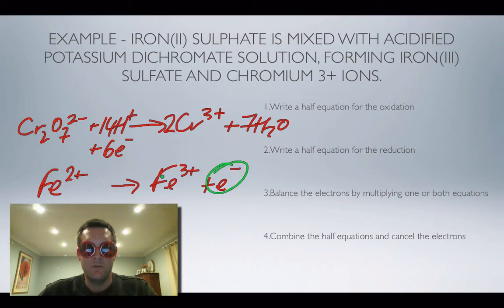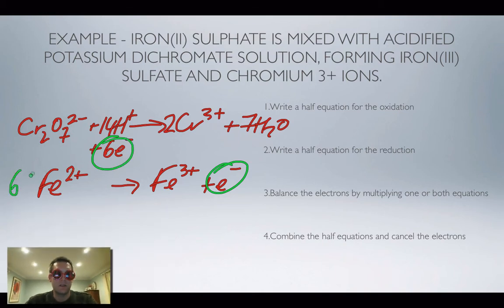Right, number of electrons here is one, six over there, so I need six of this whole second equation. Now putting these together when you've multiplied them can be a bit easy sometimes to forget to multiply something, so I'm going to be careful that I multiply this whole lot by six. Let's see what I've got.